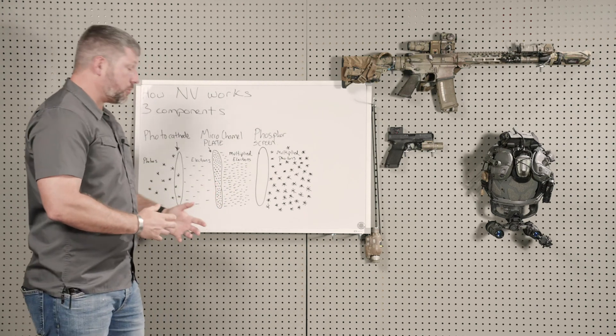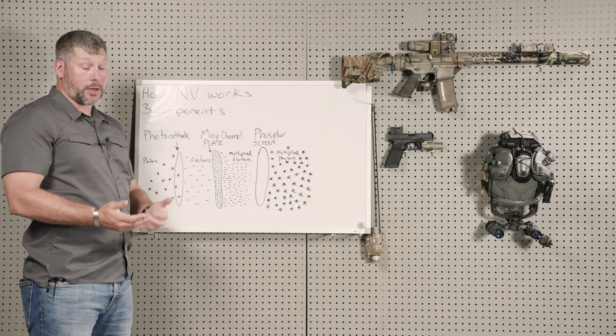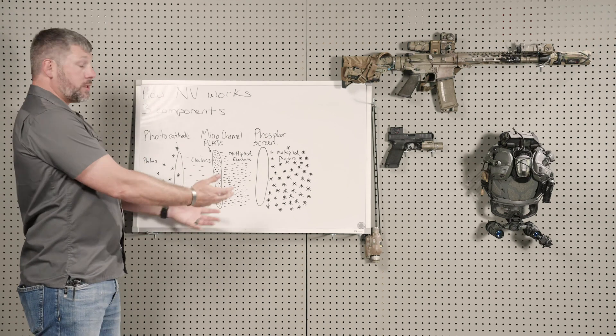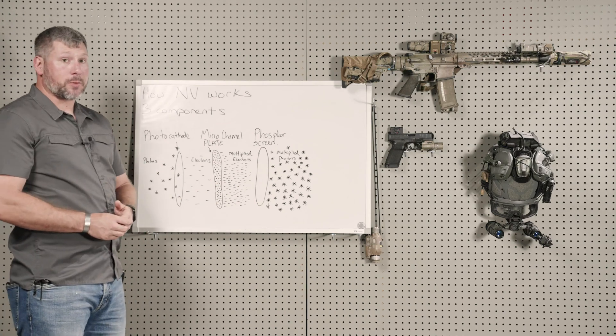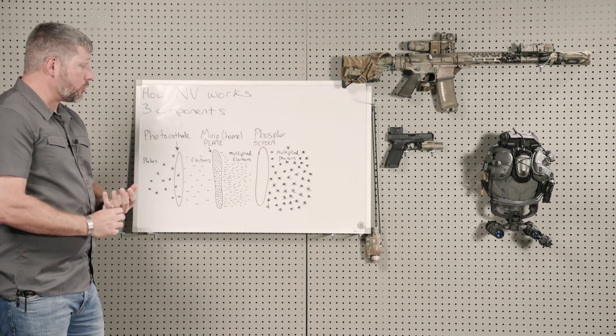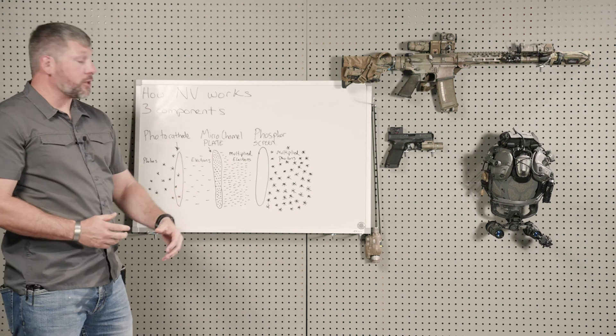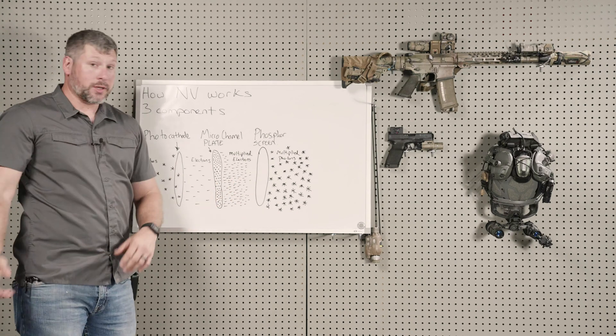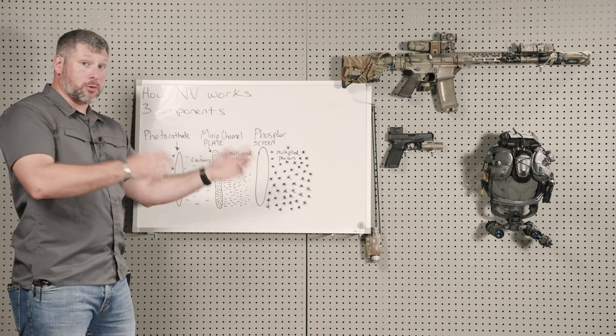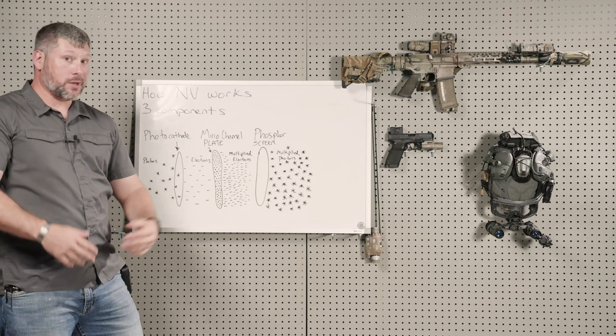But if you did not know how a night vision system accomplishes what it accomplishes, this is the down and dirty, peel back the curtain. There's some other things going on, even nerdier that I'll get into in some other videos, but this is it. This is the magic: photons to electrons to multiplied electrons back to photons. That's it.